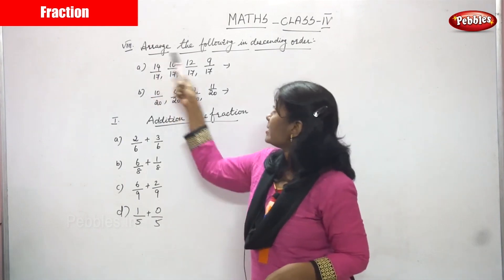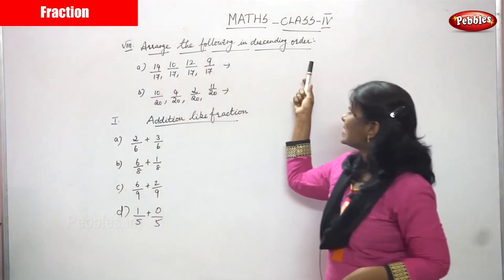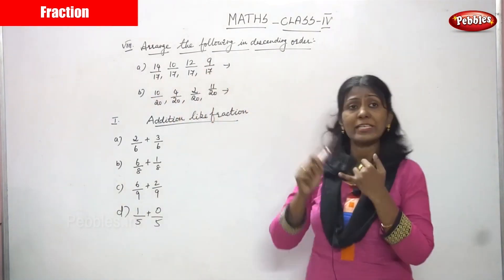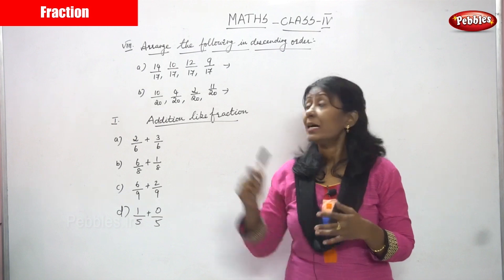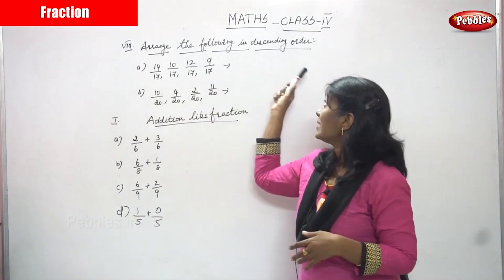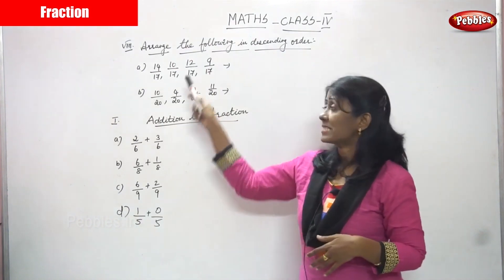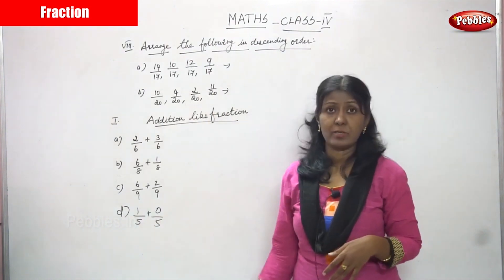Now we are going to see: arrange the following in descending order. Already we have seen ascending order. Arrange the following in descending order. This is the H subdivision.